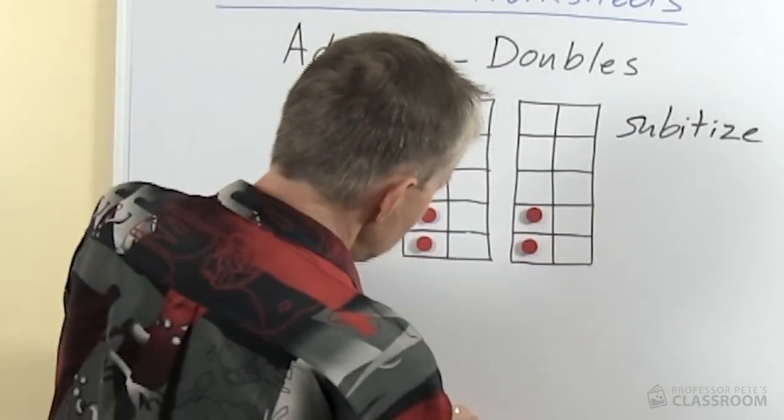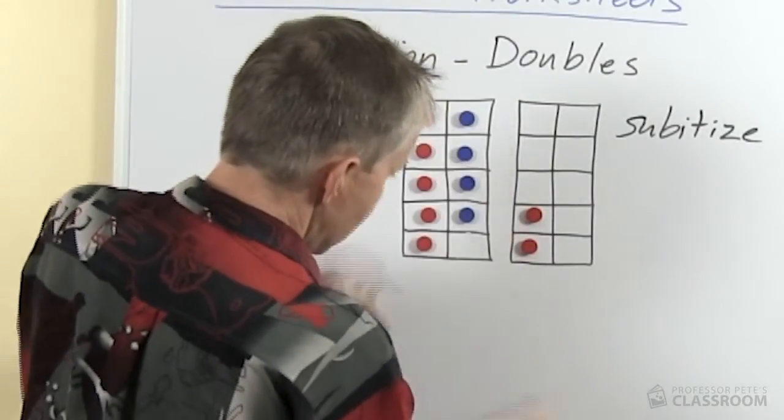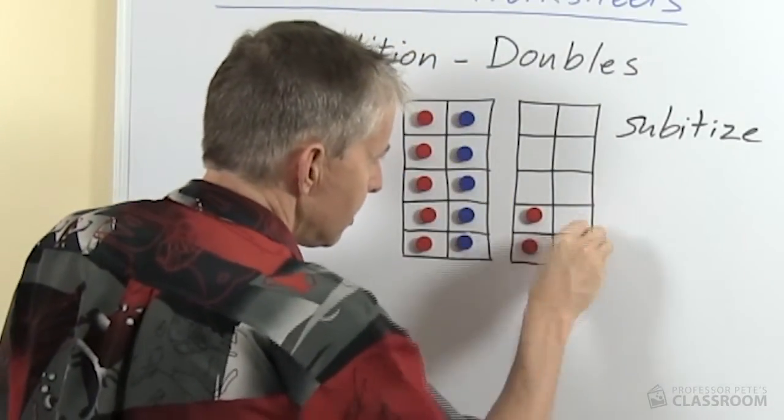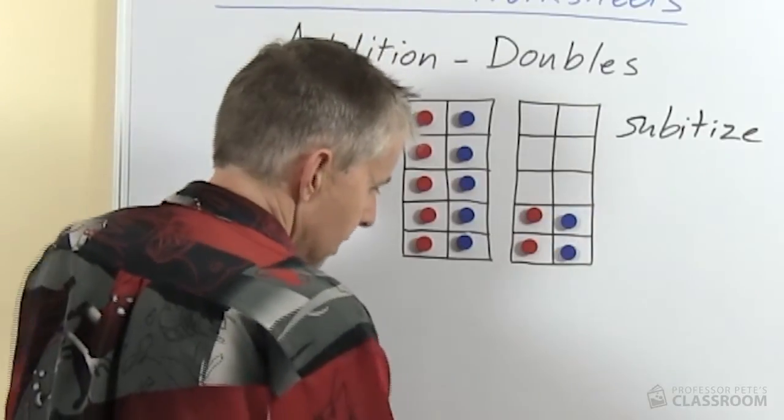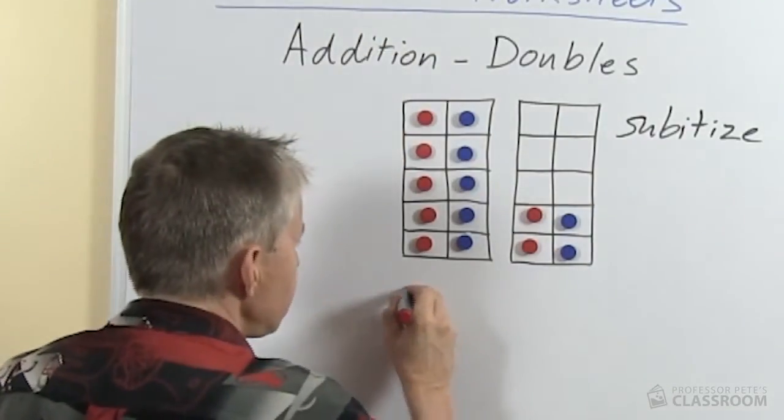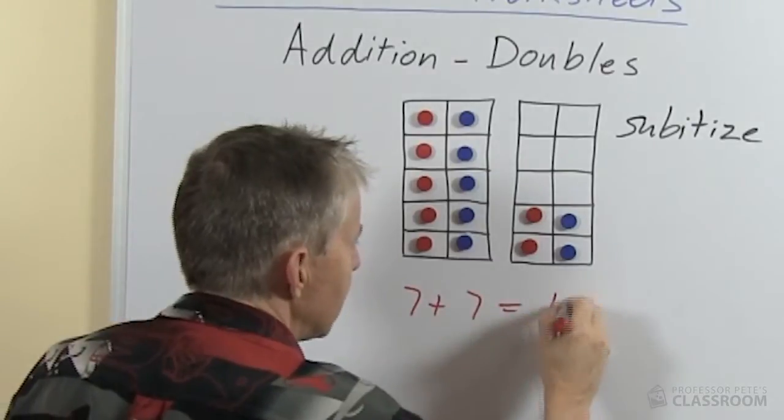So I'm going to use 2 colors now and we're going to look at double 7. Here we have 7 plus 7 and the answer is 14.